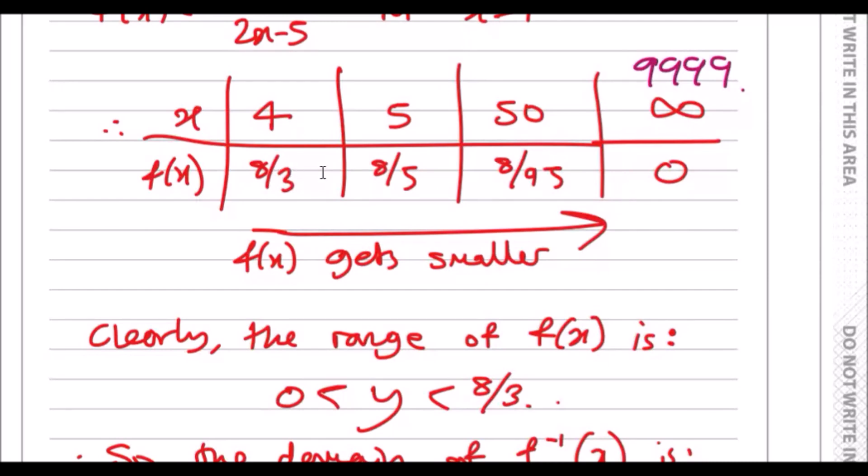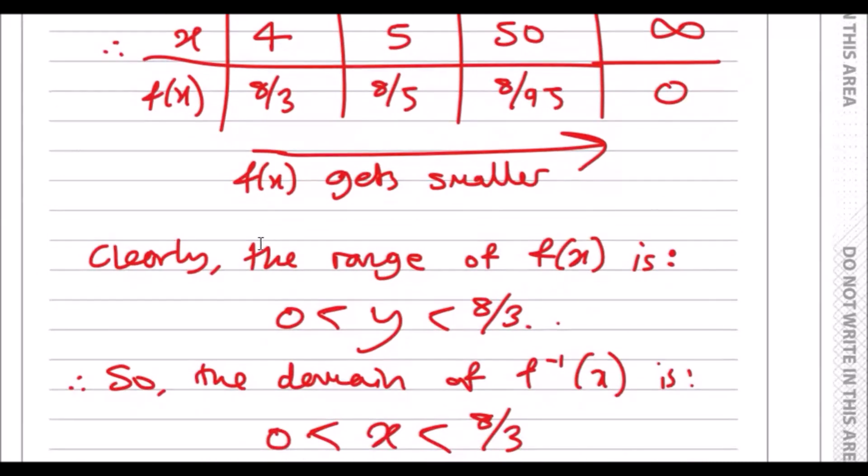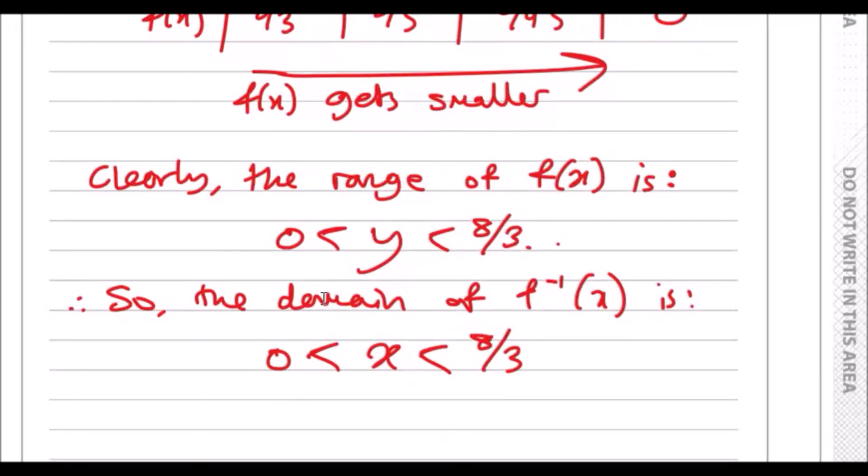So we can say that the range is clearly from 0 to 8 over 3. And if that's the range of fx, that means the domain of the inverse is just the same thing but with x. That's it. So remember, range is the y, x is domain. So this is really a little quick tip.